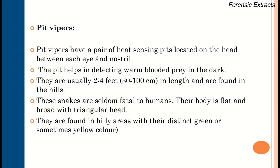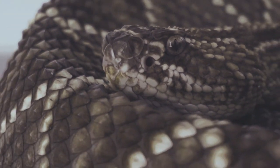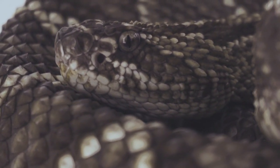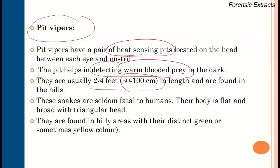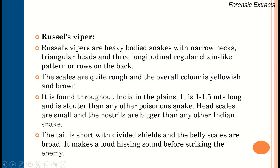Another snake is the pit viper. The pit is a heat-sensing organ that senses warm-blooded prey in the dark. Usual length is 32 to 100 centimeters; they are seldom fatal to humans. Their body is flat with a triangular head, and the pit is located between the eye and nostril, serving as the heat-sensing organ.